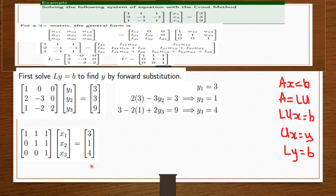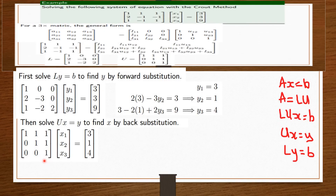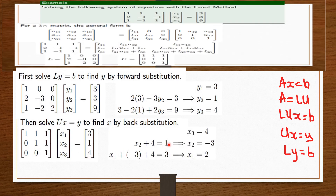This is U, this is our X, and these are the values for Y we just had. Since we know U and Y, we can find the values of X. Finding the values of X from here, we solve easily by starting from the bottom since there are more zeros there — this method is called the back substitution method. From here we can know that X3 equals four. Then X2 plus X3 equals one, and since X3 equals four, we can find X2, so X2 plus four equals one, giving us X2 equal to negative three.